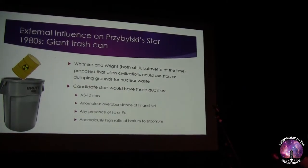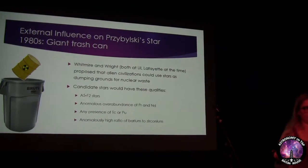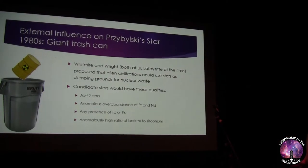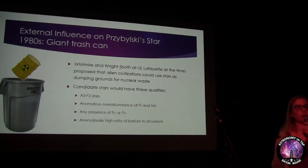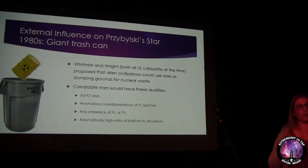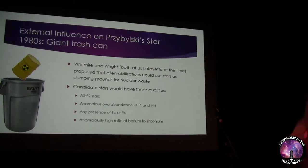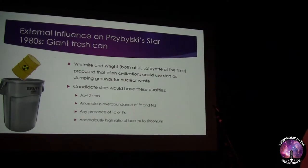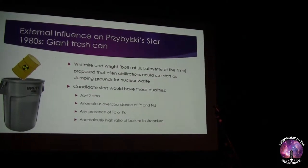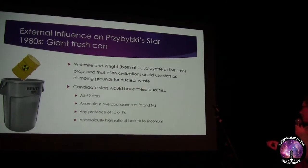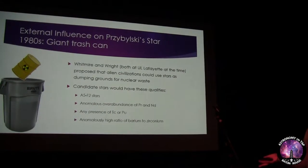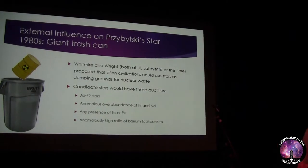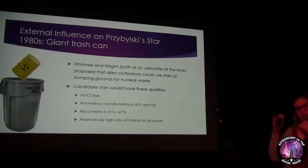Whitmire and Wright wrote a paper discussing which stars we'd be able to best observe this nuclear waste on. Such stars would have four qualities: they would be spectral type A5 through F2 — hot radiative stars that don't mix up material, so any dumped waste wouldn't get lost in the depths of the star. Additionally, they would have an inexplicably high abundance of praseodymium and neodymium, any presence at all of technetium or plutonium, and a really weird high ratio of barium over zirconium.